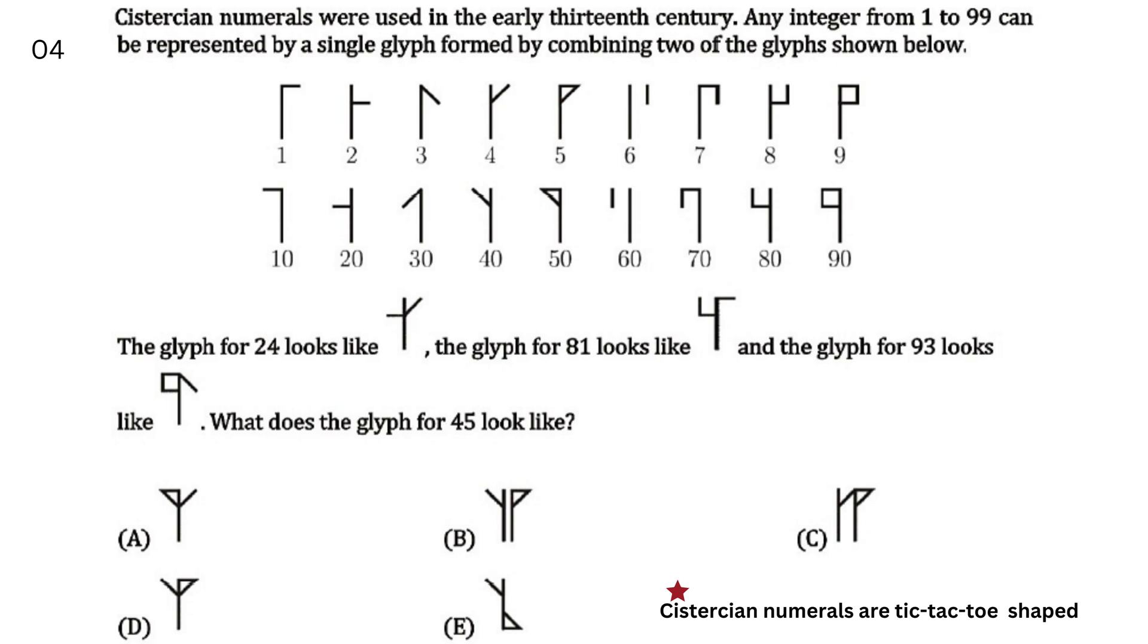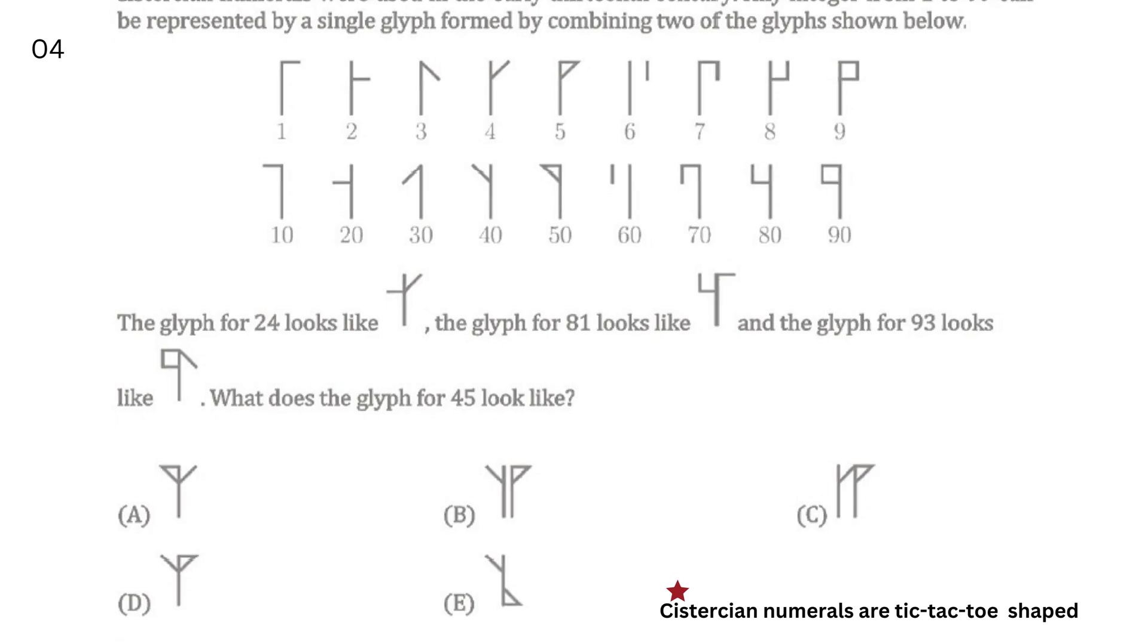For the answer, you have got the tens in the lower series and the units in the upper series. For 45, we will take the glyph of 40 and combine it with the glyph for 5. So your answer will be D.